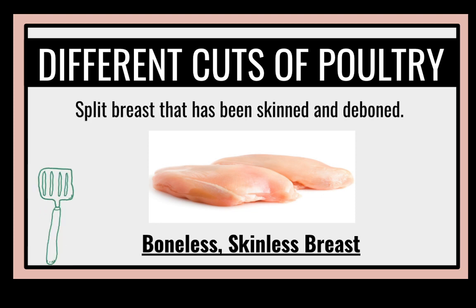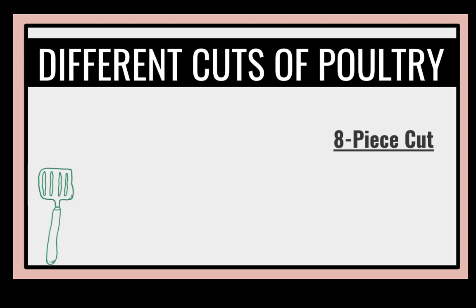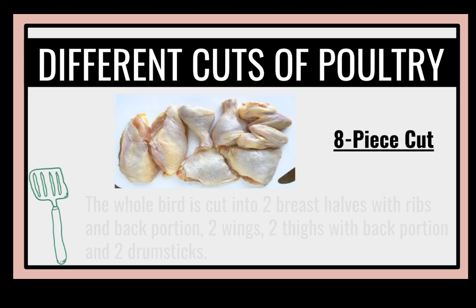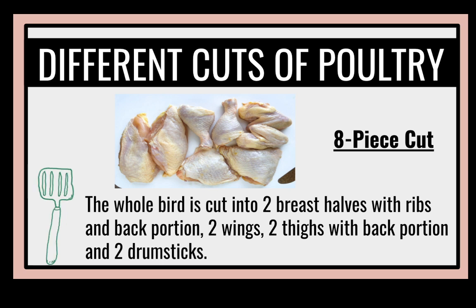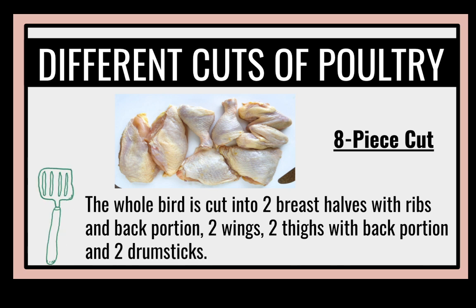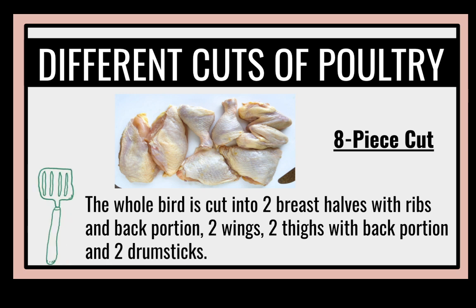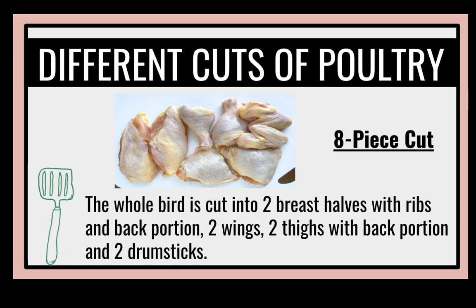Boneless, skinless breast: a split breast that has been skinned and deboned. Eight-piece cut: the whole bird is cut into two breast halves with ribs and back portion, two wings, two thighs with back portion, and two drumsticks. If you're going to buy chicken in the supermarket or in the wet market, you can ask them to give you an eight-piece cut of chicken.